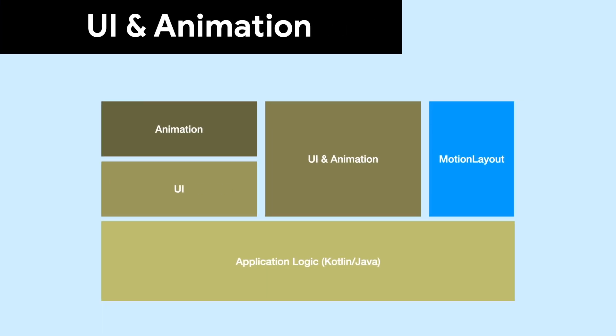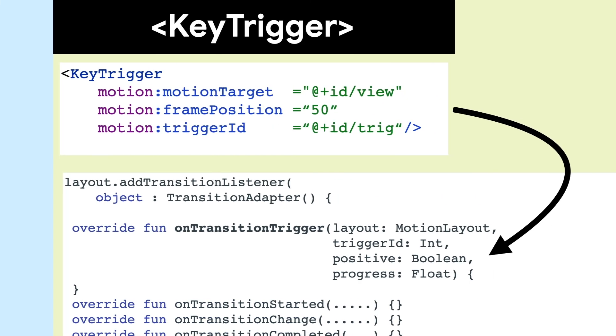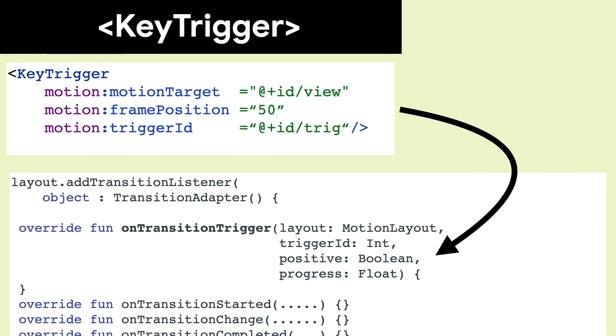Motion Layout allows you to think of animations as a layer on top of your UI, or an integral part of your UI. You can choose based on the needs of your application. But sometimes, you need callbacks back into your code. And Key Trigger allows that.